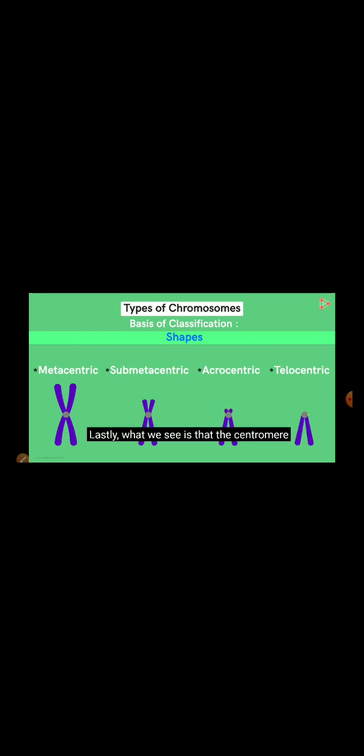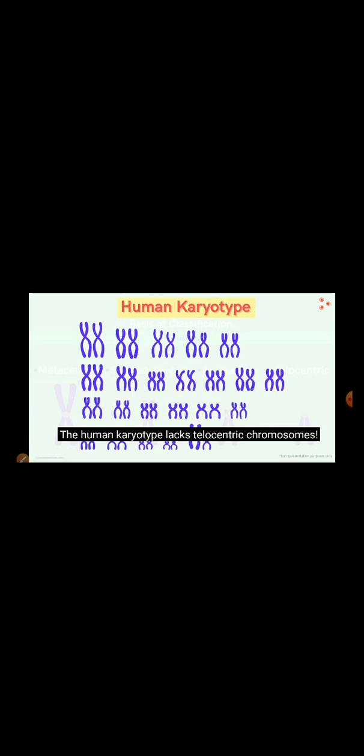Lastly, what we see is that the Centromere is present at the extreme end. That is, the Centromere is placed at the telomeric region. Hence, the name telocentric. However, these chromosomes are not found in humans. The human karyotype lacks telocentric chromosomes.